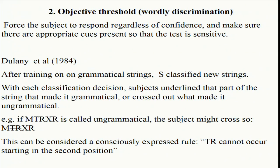So if the problem is that subjects might not be confident enough to say something, why don't we bypass the whole confidence issue and force them to respond? It's a bit like with the subliminal perception case — in the original Marcel experiments, people made a presence/absence judgement, and someone might say 'I'm not confident enough, I'll say absent.' So what Cheesman and Merikle did was give them red/green/blue/yellow — you have to say one of them, we're forcing you to respond. Don't care if you're not confident — you've got to say one.